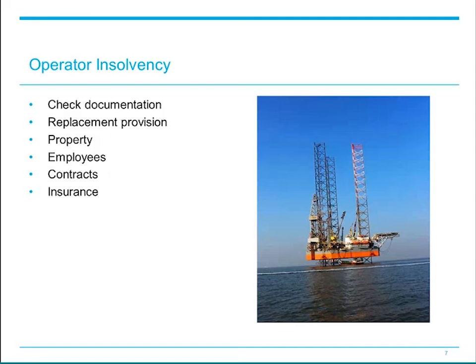If there's not a valid trust arrangement over monies, or the local jurisdiction doesn't recognise the concept of trust, or the assets have been used in a way to defeat the trust, then clearly the non-operators have an issue. A trust might be defeated, for example, by the operator mixing its funds with those of the joint account. The ability of an operator to co-mingle funds is often set out in the JOA. Even where the operator is not entitled to co-mingle funds, we've come across situations where this restriction has not been observed in practice. Even if a trust over funds in a joint account is effective, where the operator is cash-calling, it's important to monitor these on an ongoing basis and use audit and other information and reconciliation rights as necessary, in order to keep over-calling to a minimum and ensure that any surplus funds are returned to the non-operators as soon as possible. Taking this action will minimise the cash that might be trapped in an operator's insolvency.